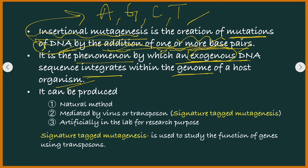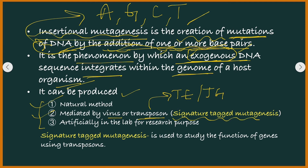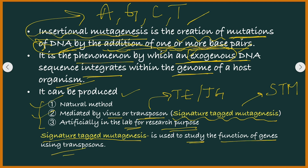Insertional mutagenesis can be produced using three methods. First, by using a natural method. Second, mediated by virus or transposable elements — also called jumping genes — and this technique is also called signature tagged mutagenesis, or STM. Third, by using artificial methods in the lab for research purposes. STM, that is signature tagged mutagenesis, is used to study the function of genes using transposable elements.